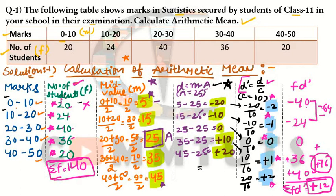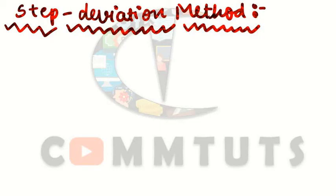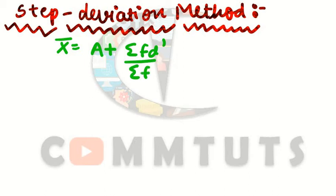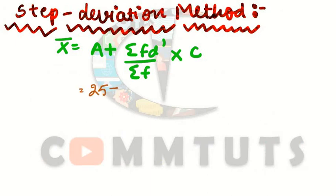Now we have all values: Σf = 140, Σfd' = 12, common factor c = 10, and assumed mean A = 25. We will now put these into the formula to obtain the arithmetic mean. The formula for step deviation method in case of frequency distribution series is: X̄ = A + (Σfd' ÷ Σf) × c. Substituting: X̄ = 25 + (12 ÷ 140) × 10.